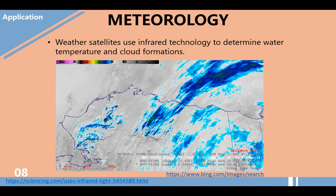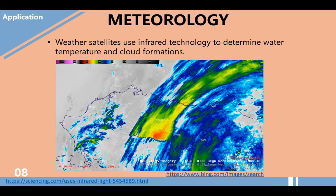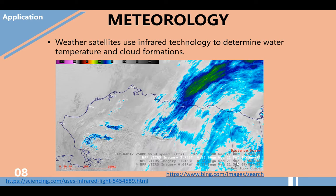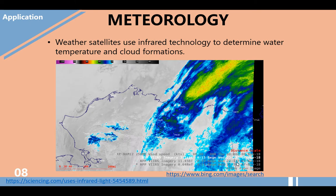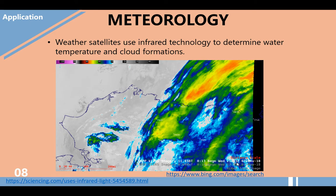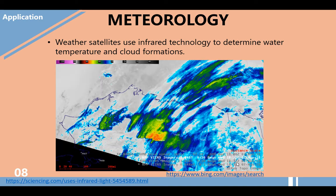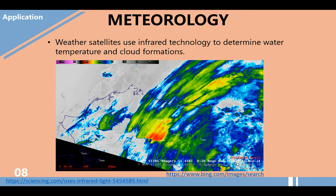Another application is meteorology. Weather satellites use infrared technology to determine water temperature and cloud formations. By using this technology, we can have weather forecasting.